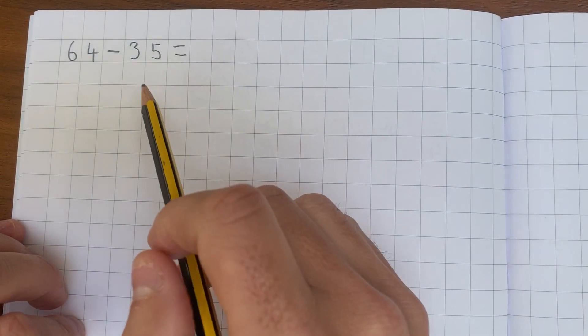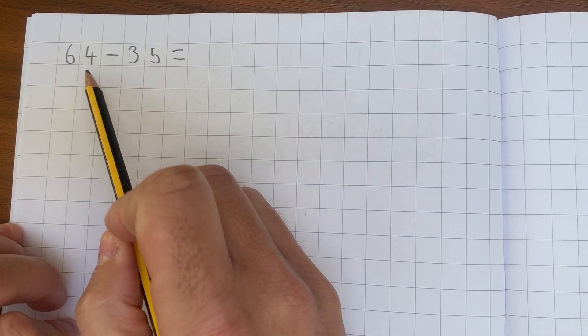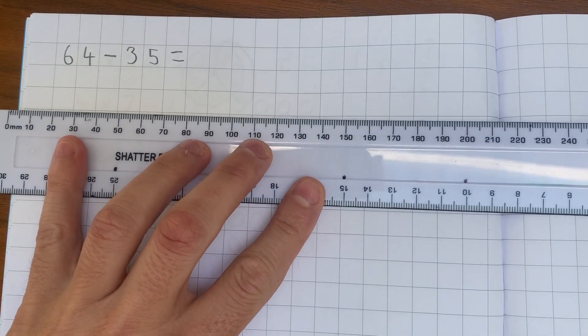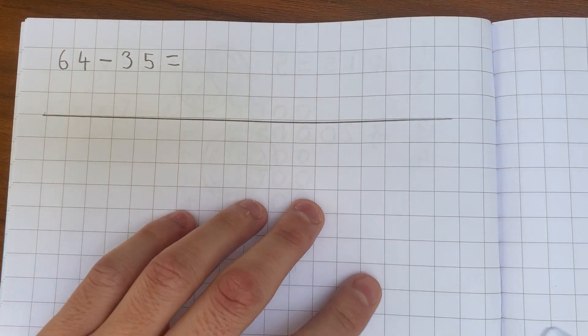So I'm going to subtract 35 from 64. I'm going to draw a number line to start with. If you've got a ruler, that's fantastic. If not, that's not the end of the world.